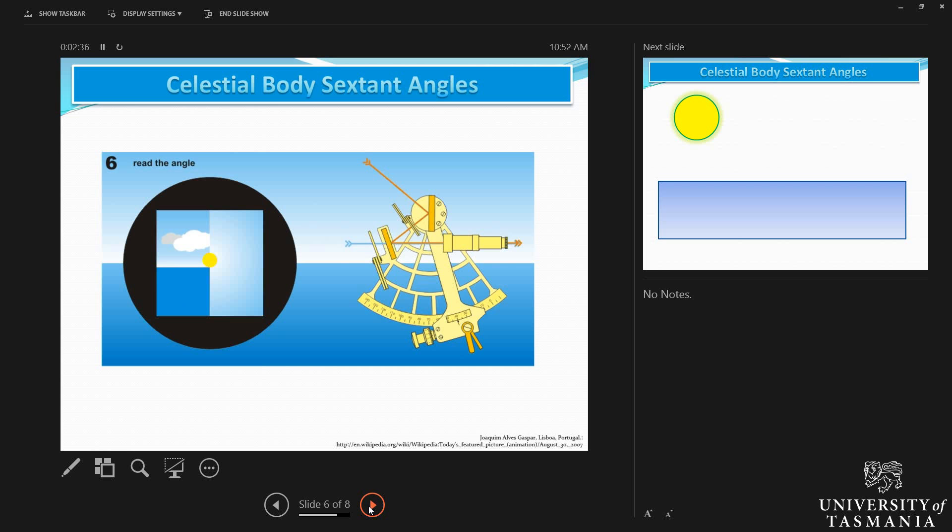We use the word kissing the horizon—that means it is just making a tangential arc to the horizon. Once the body is at the horizon, you gently rock the hand to make sure when the body is just making an arc with the horizon.